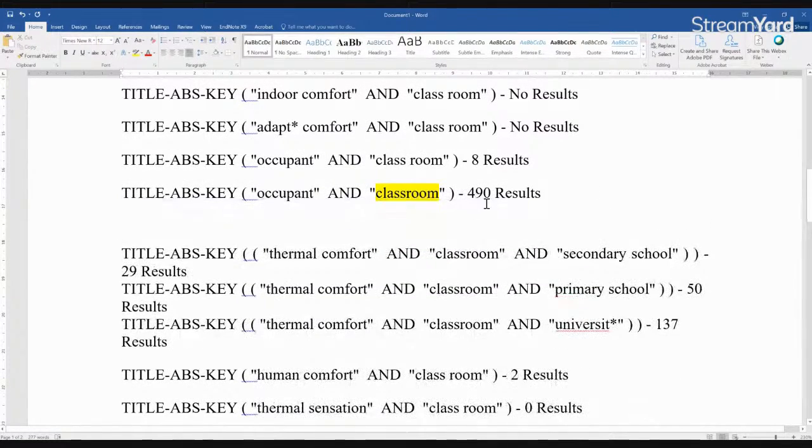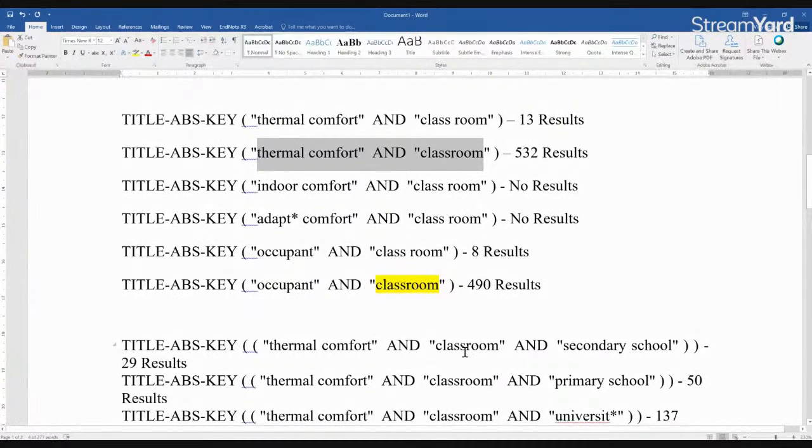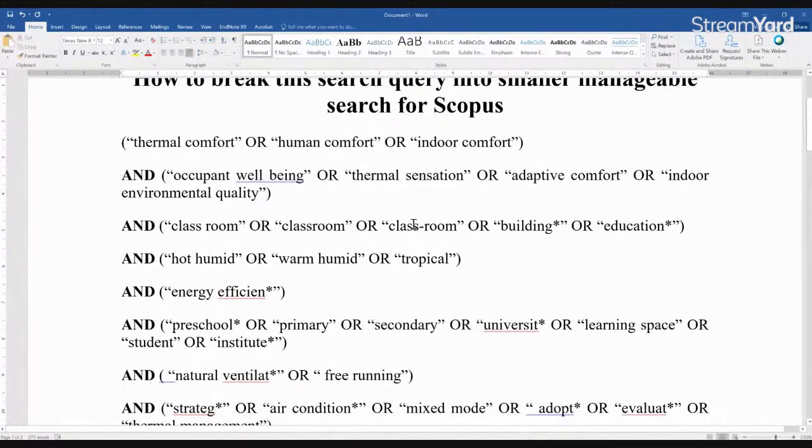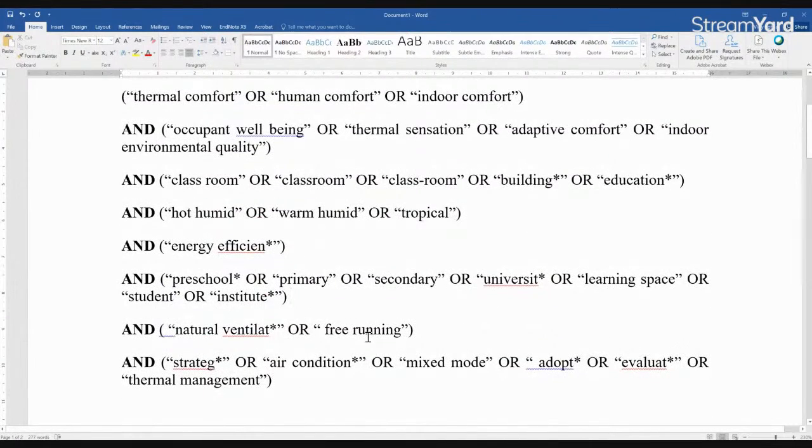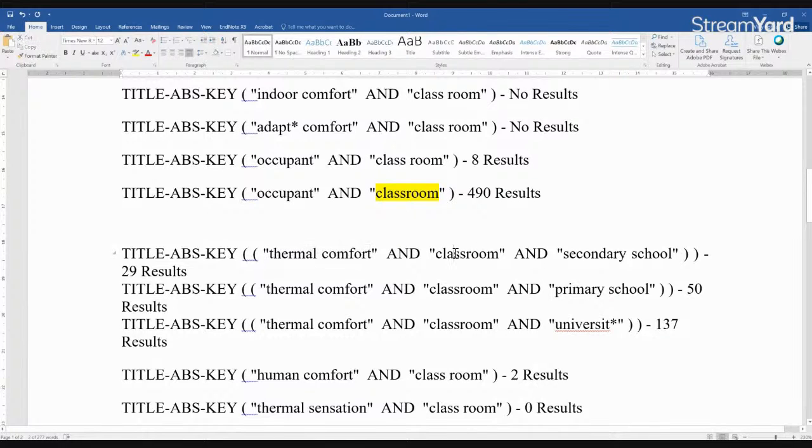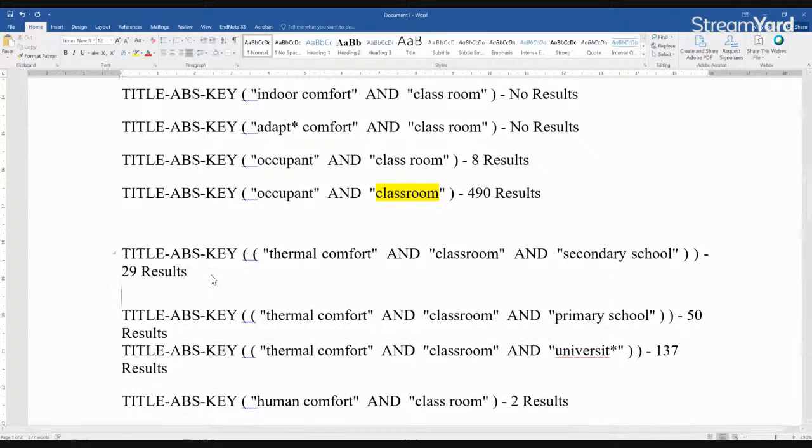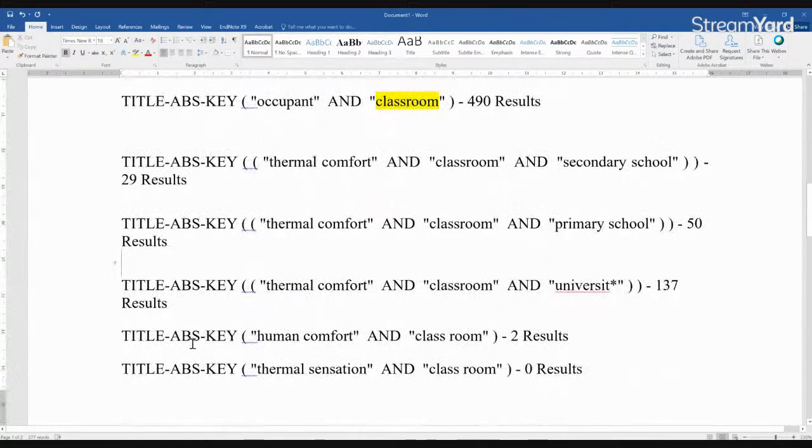Okay. So if I take this, put it here, 532 results just by taking off this one space. So which kind of reiterates the fact that classroom is more commonly used than a space room. All right. So now what I've done, having looked at those 490 results or say 532 results for that matter, I've taken this query, thermal comfort and classroom. And I added secondary school to that result because we wanted to know that thermal quality in classroom for a secondary school. So there was no school in this query, but I thought I saw it somewhere. I think I might have come up with that on my own. So what I did then, I searched thermal comfort and classroom and secondary school. So that gave me 29 results. Similarly, I searched for primary school. I got 50 results. And then I searched for university with a wildcard and I got 137 results.